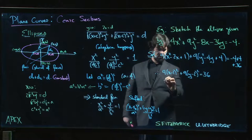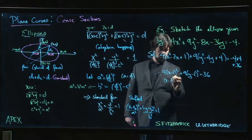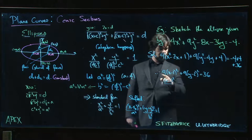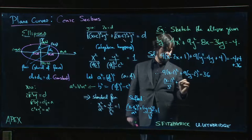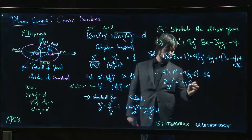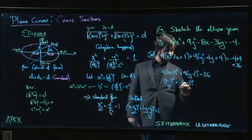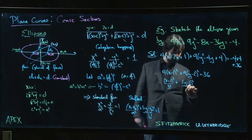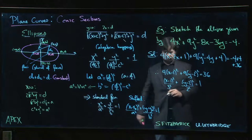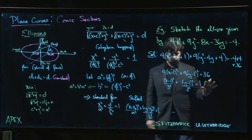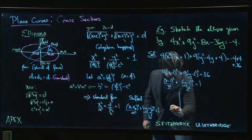So we get (x minus 1) squared - so 4 over 36 gives us 9, which is 3 squared - (y minus 2) squared - so 9 over 36 is a quarter, so we have 4 on the bottom, which is 2 squared - that should be equal to 1. Okay, so far so good. Now we're ready to sketch our ellipse.